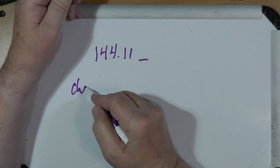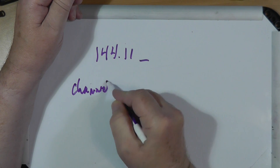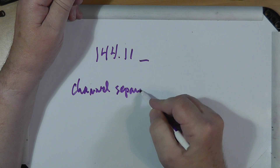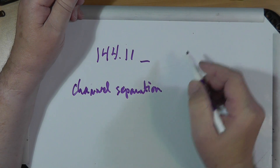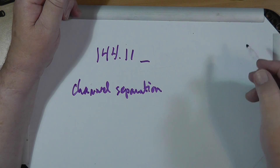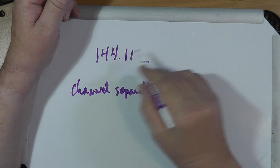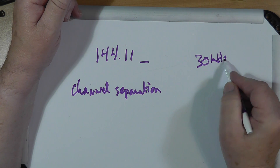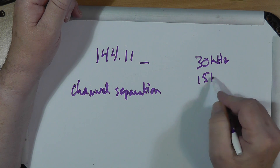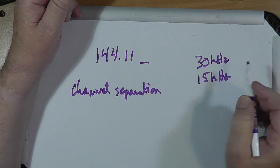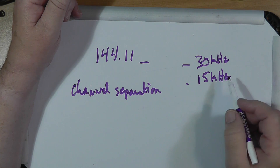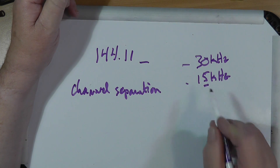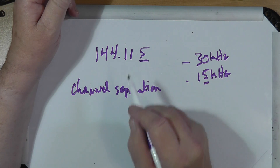This is the channel separation setting. In many places, channels are all separated by 30 kilohertz, some by 15 kilohertz. And these are the ones that you would normally get. If it's 15 kilohertz, you're going to have a digit over here.